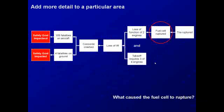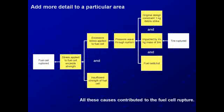We are also going to add more detail about the fuel cell rupture. The fuel cell ruptured because the stress applied to the fuel cell exceeded its strength. One part is the stress applied to the fuel cell; the other is the strength of the fuel cell — had the fuel cell been stronger, it may not have ruptured. The stress was caused by a pressure wave through the system. That pressure wave resulted from the 4+ kilogram mass of tire that struck the fuel cell when the tire ruptured. The pressure wave was also aided by the fact that the fuel cells were full, creating nowhere for the compression to go, and the original design constraint for the fuel cell was meant to last through only a 1 kilogram debris strike. All of these causes contributed to the fuel cell rupture.